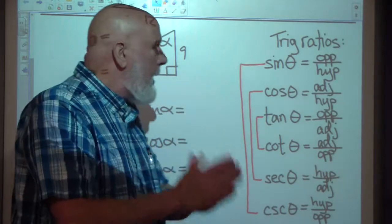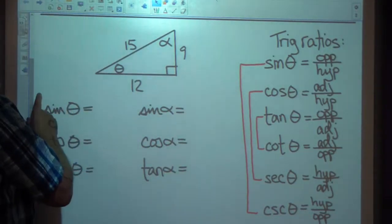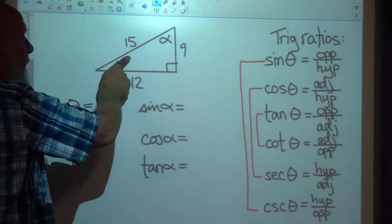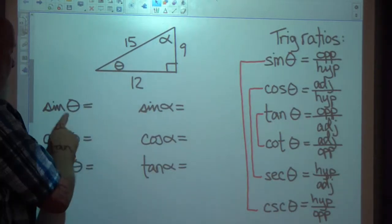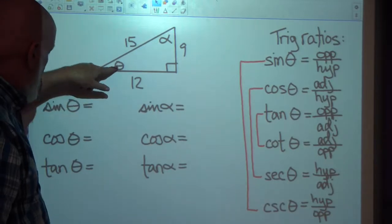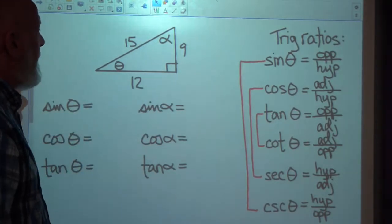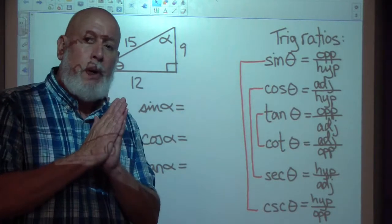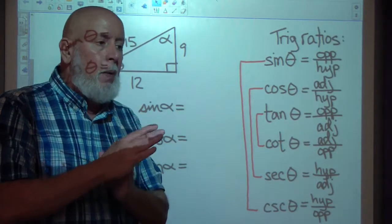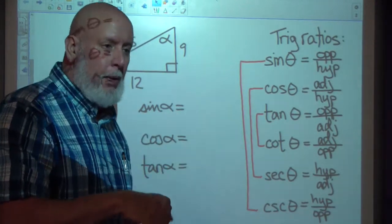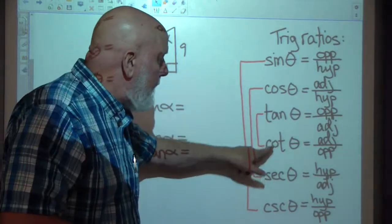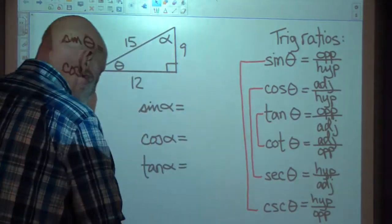We're going to find, within the context of a triangle, the sine, cosine, and tangent of theta or alpha. Today's worksheet will only deal with sine, cosine, and tangent. With the next worksheet and lecture, we'll deal with cotangent, secant, and cosecant.